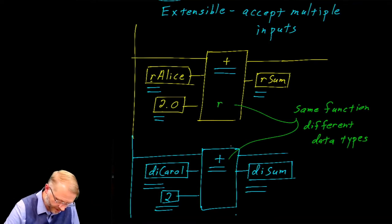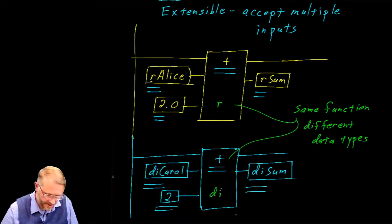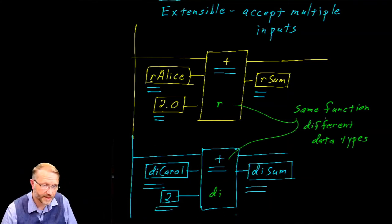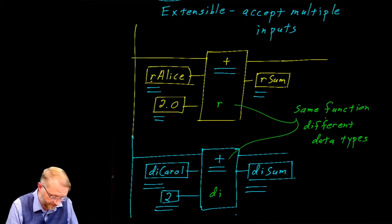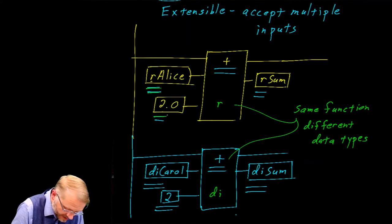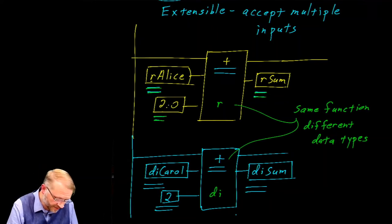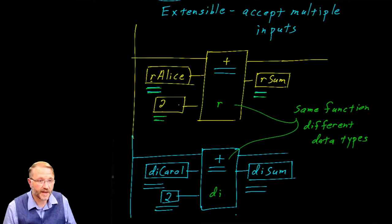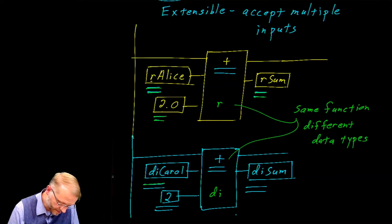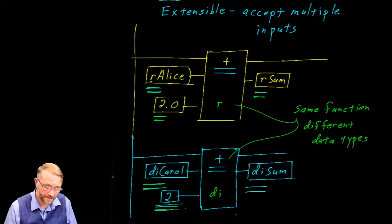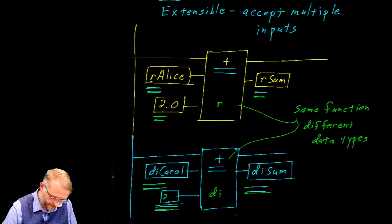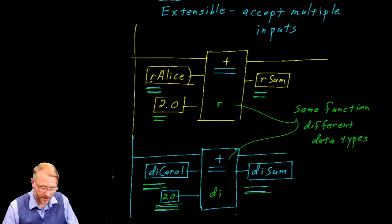While the function will operate on different data types, that does not mean you can mix and match data types on an individual function. Both inputs are type real and the output is type real — you cannot change that. For example, if you set one input to 2 (an integer), you would have an error because 2 is not a type real. We see the same thing with double integers: all inputs and the output must be the same type. If you were to set an input to 2.0 (type real) in a double integer function, you would have an error.